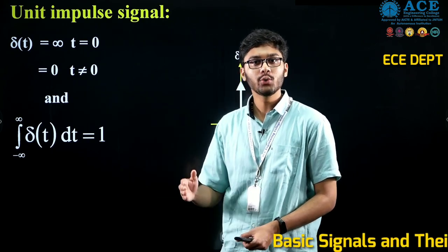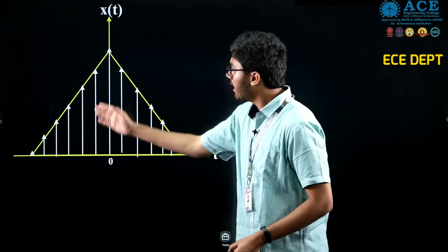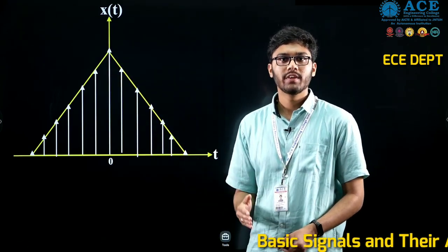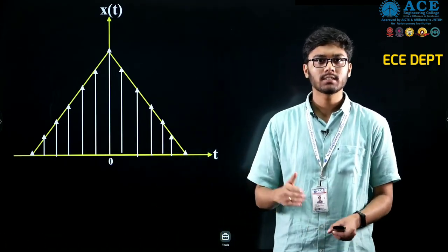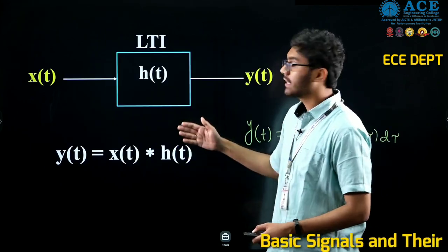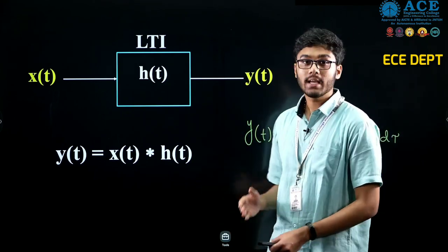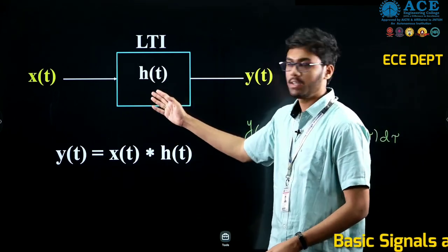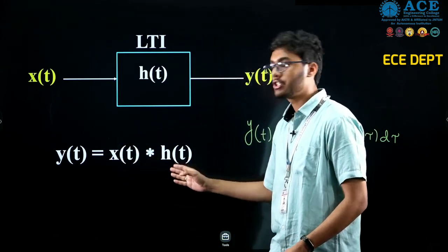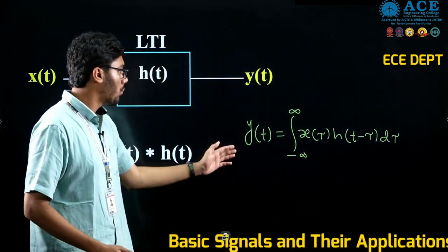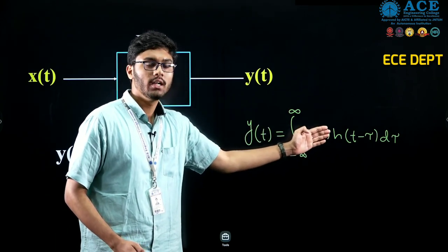The definition also includes the area under del(t) equals 1, that's why we call it a unit impulse signal. Its real-time application is that any arbitrary signal can be represented by a weighted sum of shifted impulses. By knowing the impulse response of the system h(t), the output y(t) equals x(t) convolved with h(t). Mathematically, y(t) equals the integral from minus infinite to infinite of x(tau) times h(t minus tau) d-tau.